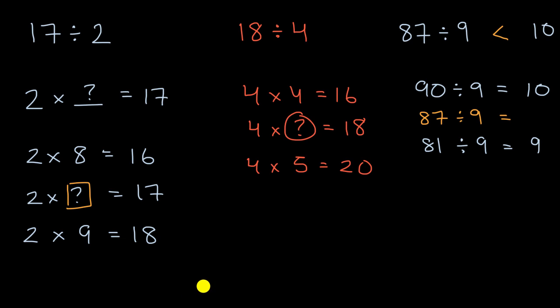So the whole point of this video is to get us a little bit comfortable with this idea of dividing where we might get an answer that is not a whole number. And in the future, we'll learn how to compute that. But for now, we're just learning to estimate and just get a sense of this is going to be between 8 and 9. This is going to be between 4 and 5. This is going to be between 9 and 10, which means it's going to be 9 point something, which means it's going to be less than 10.